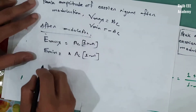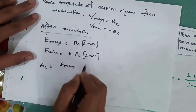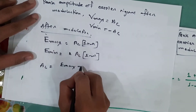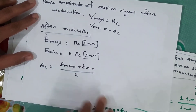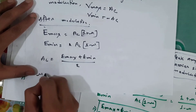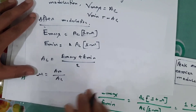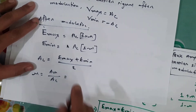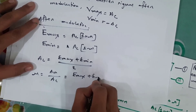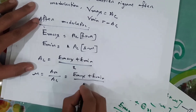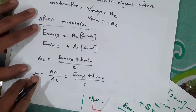Ac is [E_maximum plus E_minimum] divided by 2. If we look at Ac, Ac equals E_maximum. The highest plus lowest divided by 2 gives the middle. E_maximum plus E_minimum divided by 2. The first step gives mu = Am divided by Ac. mu equals [E_minimum] divided by 2. This is the modulation index.